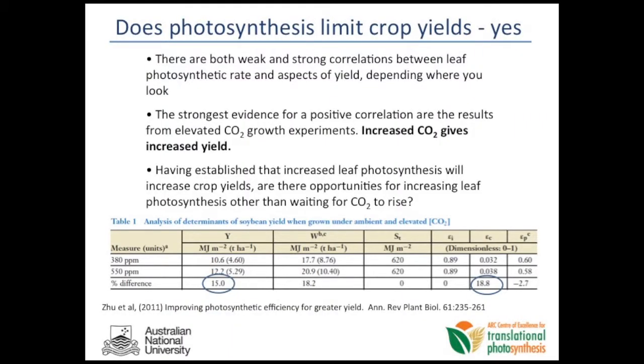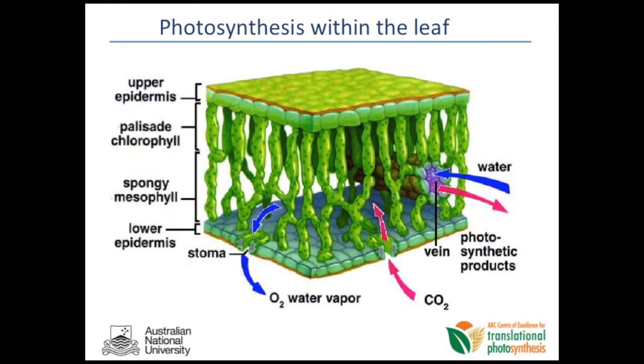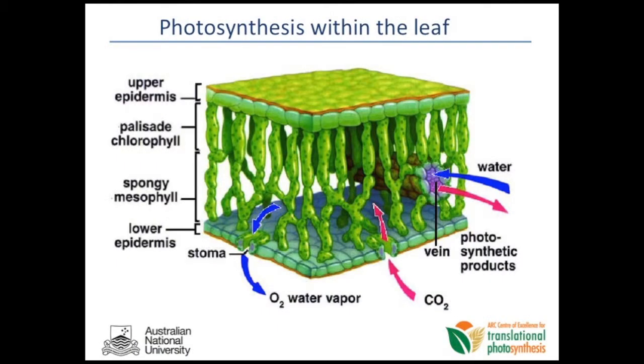One way you can increase photosynthetic efficiency is to wait for CO2 to rise — and that will occur with time, though we're all concerned about that. The other way is to take directed efforts to change the processes we know are limiting. Just to give the non-plant biologists in the audience a snapshot: photosynthesis occurs in a leaf. Light is incident on the leaf surface, absorbed by chloroplasts arrayed within the leaf. These are in contact with airspaces that allow CO2, water vapour, and oxygen to exchange with the cells. Stomata on the outside of the leaves mediate the exchange of water vapour, oxygen and CO2 with the chloroplasts. It's this process of chloroplasts and gas exchange which basically underlies the efficiency of photosynthesis.